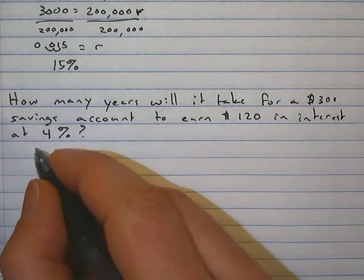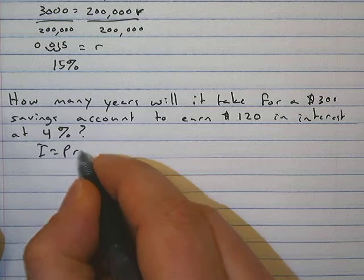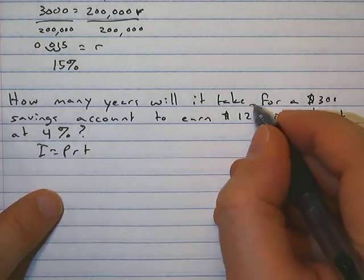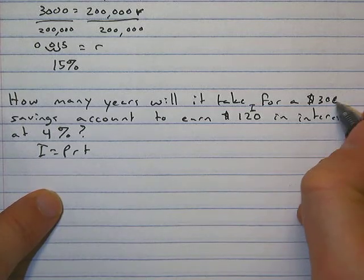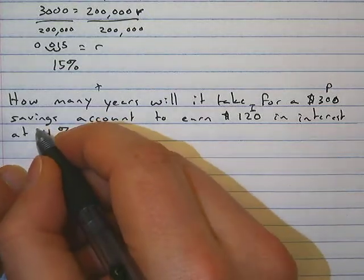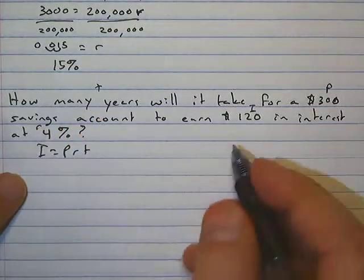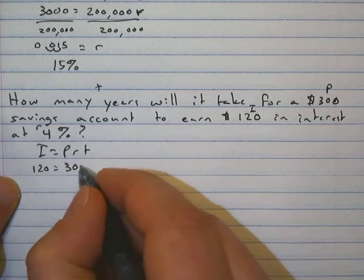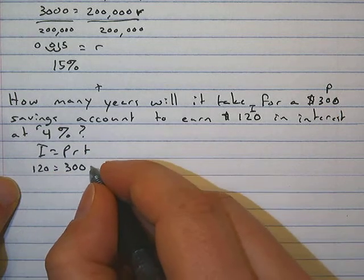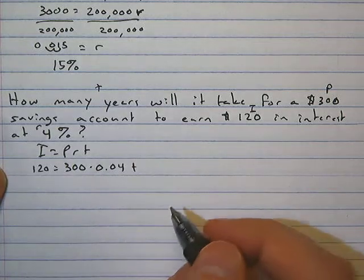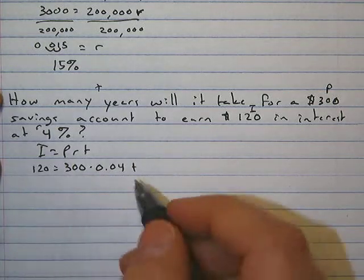Now we do the same thing: I equals PRT. Figure out what we have. Well, interest is $120, principal is $300, time we do not know—we're looking for time—and our rate is 4 percent. So interest is 120 equals principal 300, our rate is 4 percent which is equal to 0.04.